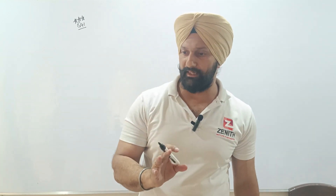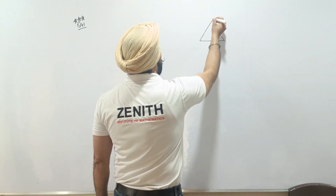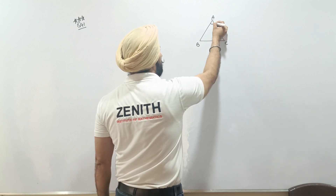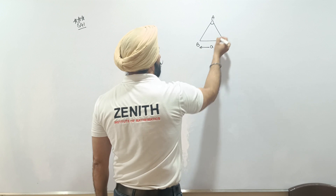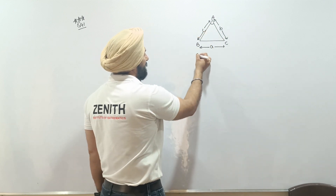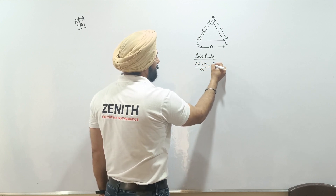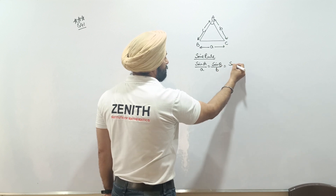Question number 41, a triple star category question. For this question we must know the sine rule as well as the cosine rule. In triangle ABC, angle A has opposite side small a, angle B has opposite side small b, and angle C has opposite side small c. The sine rule states: sin A over small a equals sin B over small b equals sin C over small c.